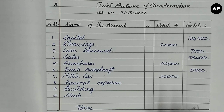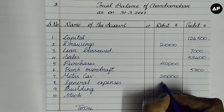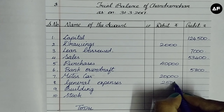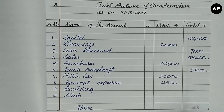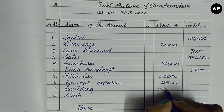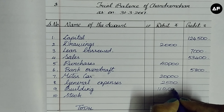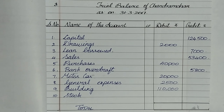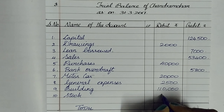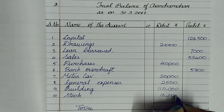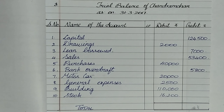General expenses, according to the nominal account rule, are debited because we debit all expenses — so 2,500 is debited. Buildings is a property and therefore debited as an asset. Stock is also a property and therefore debited at 16,200. Now we get the total of both the debit and credit columns.